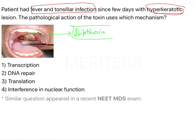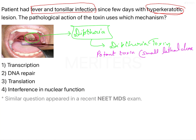In diphtheria, there is a toxin known as the diphtheria toxin. This is a potent toxin, meaning it has a very small lethal dose — the lethal dose is 0.1 microgram per kg.